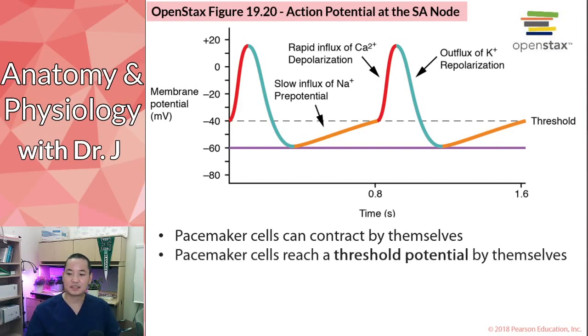Now, they can reach a threshold potential by themselves. If you remember from neuronal action potentials, the neurons need some sort of stimulus. They need something to push themselves toward this value we call a threshold. So a threshold is like a minimum a cell has to reach before it does this action potential. So this is an action potential here, and this is an action potential here.